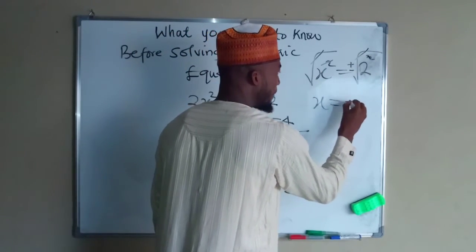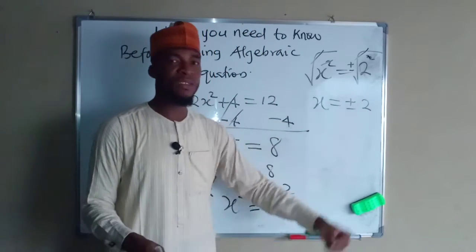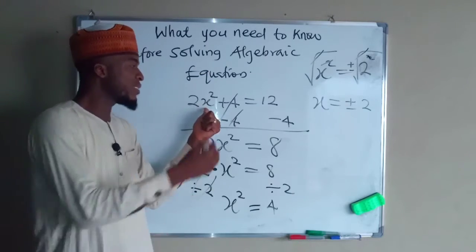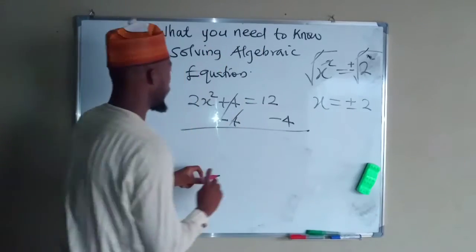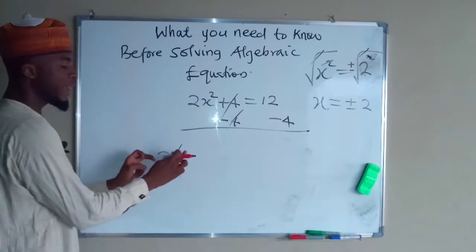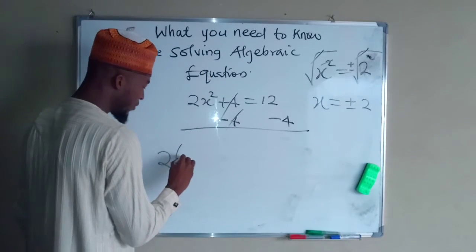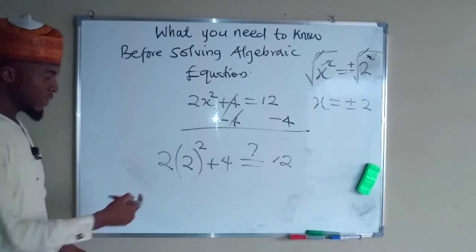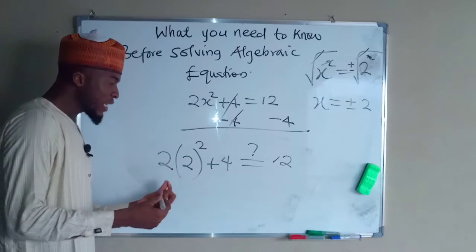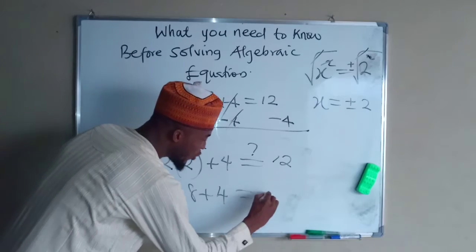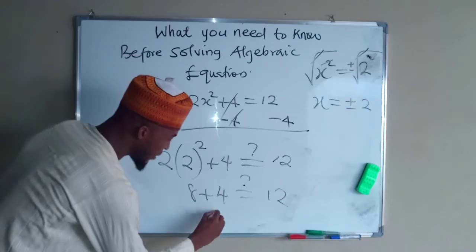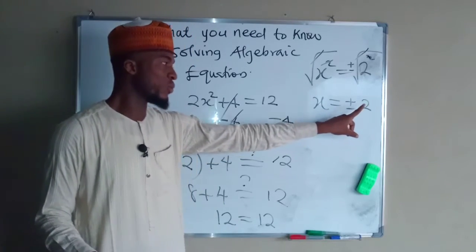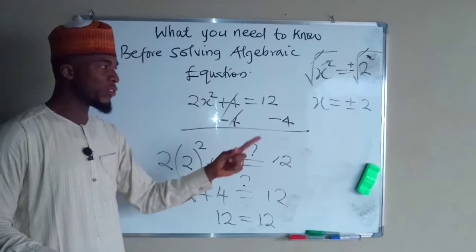Taking the square root of both sides, x squared under the root gives x, and the square root of 4 gives plus or minus 2. So x equals plus or minus 2, meaning x could be positive 2 or negative 2. But we must verify by testing these values in the original equation. Testing positive 2: 2 multiplied by 2 squared plus 4 — two squared is 4, times 2 is 8, plus 4 equals 12. Therefore 12 equals 12, so positive 2 is confirmed as one value of x.